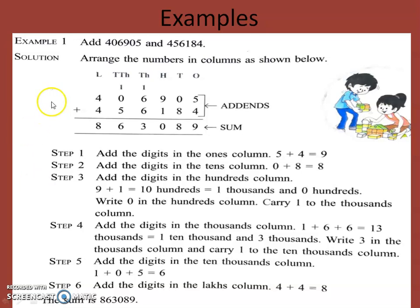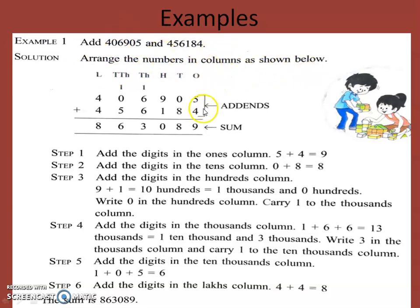In example number one, add four lakh six thousand nine hundred and five, and four lakh fifty six thousand one hundred and eighty four. So these two numbers we have to add. First of all we will arrange these numbers in columns as shown below, according to their place value. This is the first number: four lakh six thousand nine hundred and five, and we will place every digit of this number on its place value.